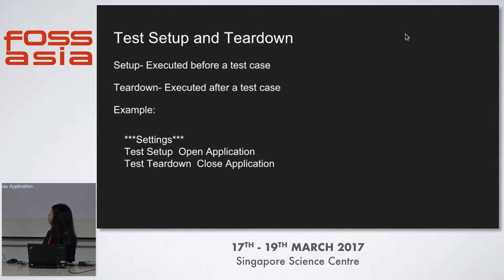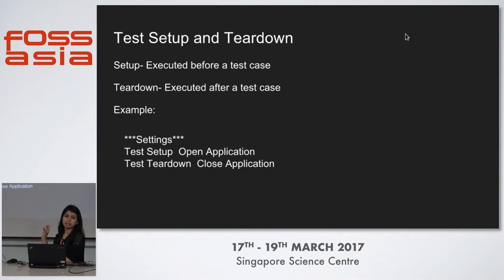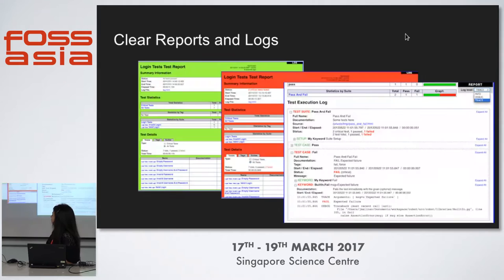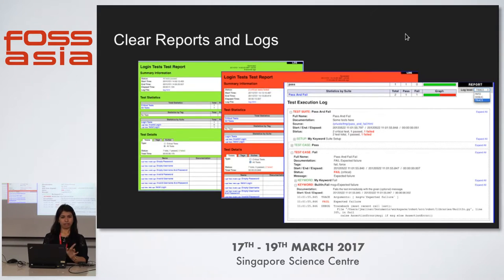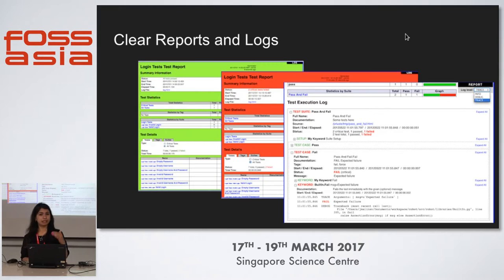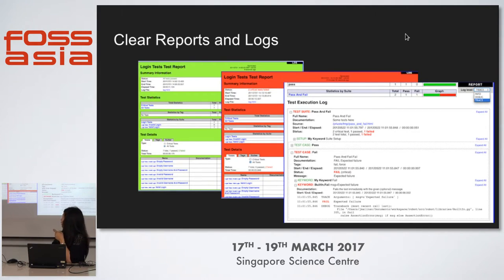A few things to remember: we need to give at least two spaces between our keyword and the arguments. If we give only one space, it will consider it part of the keyword and throw an error for an invalid keyword. So make sure you give a minimum of two to four spaces between your keyword and arguments. The reports are also very clear — if all critical test cases pass, the background will be green; if any test case fails, the background will be red. There is also a detailed execution log which tells us at which point the test cases broke and where we need to fix it.